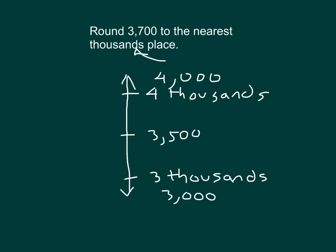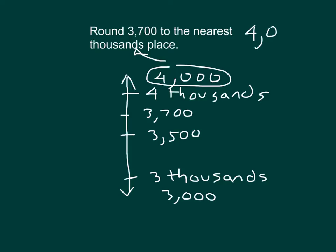The final thing we'll do to solve this problem is to place 3,700 onto the number line. Since 3,700 is more than 3,500, we place it above the midpoint. We answer the question: is 3,700 closer to three thousands or four thousand? That's why I circle it on the vertical number line. So 3,700 rounded to the nearest thousands place is 4,000.